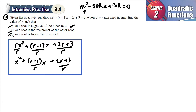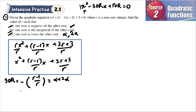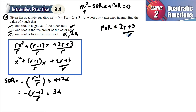For part (c), one root is twice the other. If one root is alpha, the other is 2alpha. The sum of roots gives (r−1)/r = alpha + 2alpha = 3alpha, but this has two unknowns r and alpha, so we must also use the product of roots.